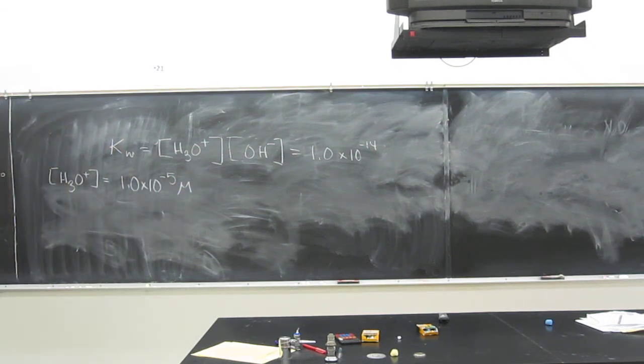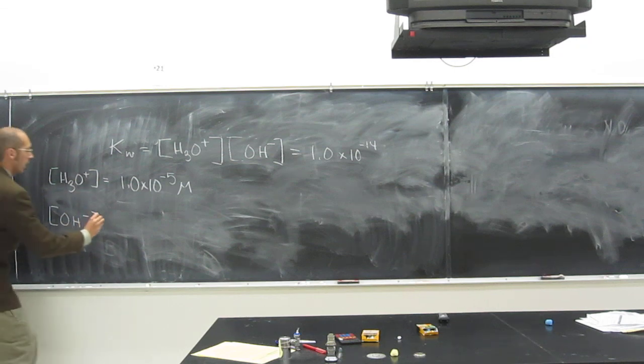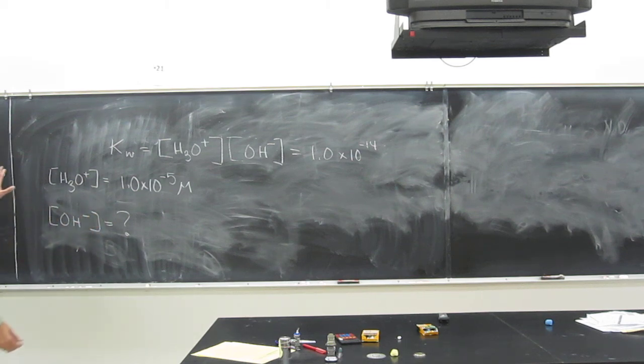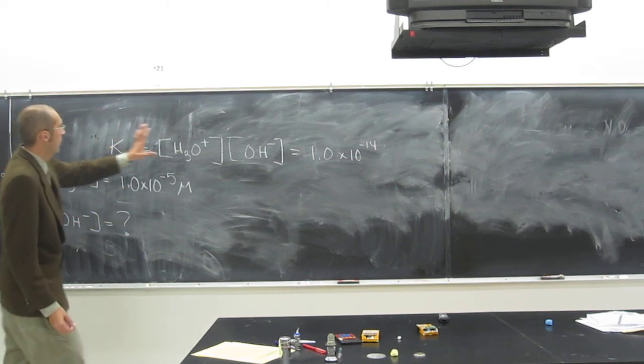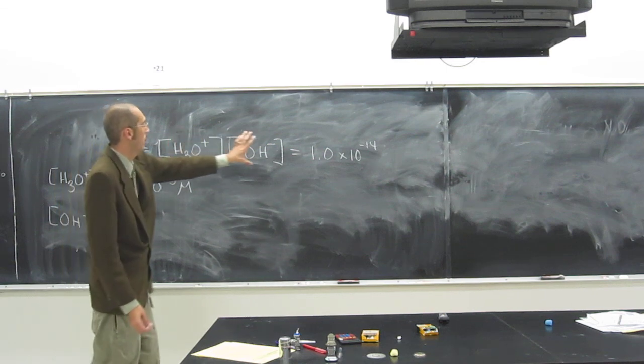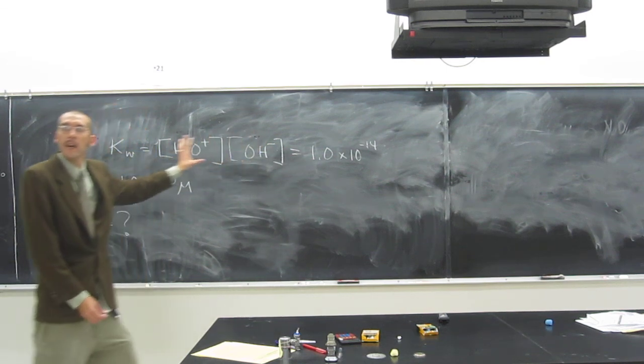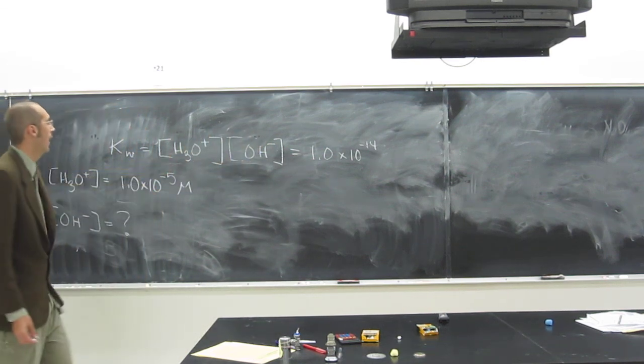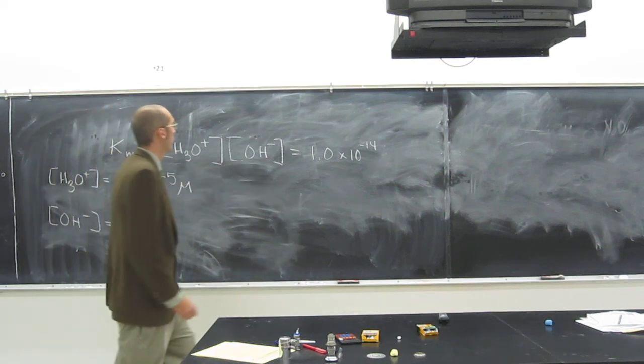So it asks you, what is that then? Hydroxide ion concentration, or OH-. So could I do this? Right. We know Kw, we know H3O+, but we don't know this. All we gotta do is rearrange this equation, isolate the variable that we're looking for.